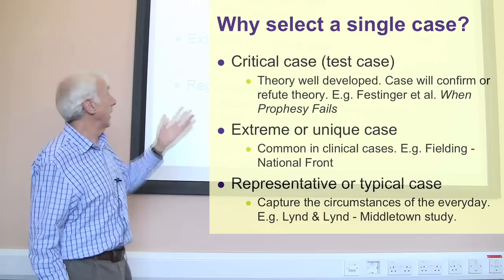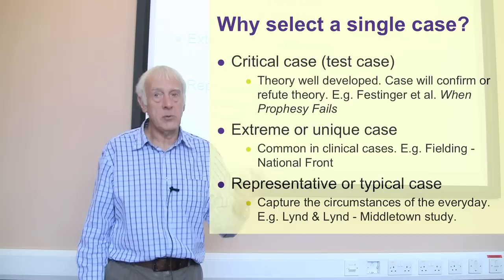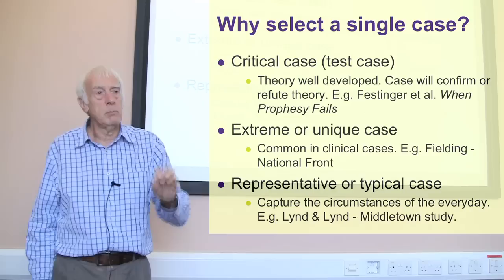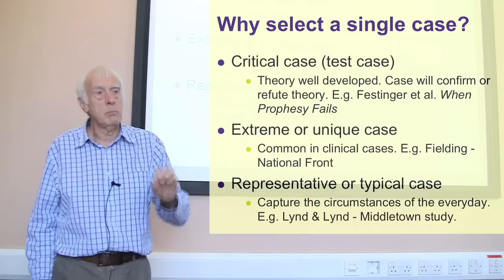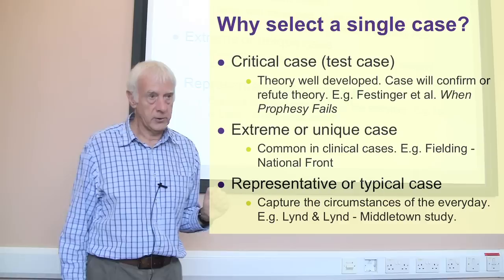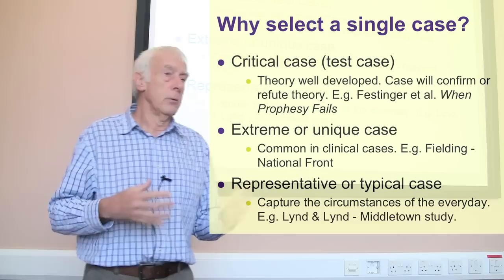Another reason for selecting a single case is because it's in some sense extreme or unique. There's no claim in this case that the case is typical in any sense — it is known to be unusual or extreme, but it's interesting for that very reason, because we sometimes need to know about extremes. That's very common in clinical cases: a single case study in a clinical, medical, or psychiatric context is often chosen because it is extreme, and we can take that into account in the way we understand what's going on. Nigel Fielding's study of the National Front is an example: an extreme right-wing organization, not typical of all political parties, but important for understanding how some people might be responding to things like racism.